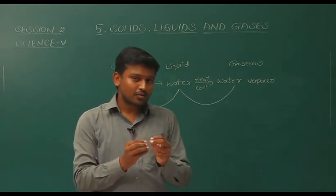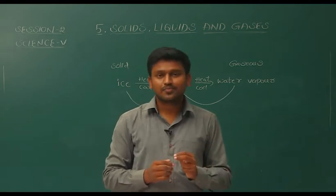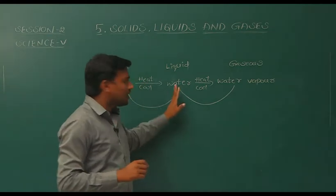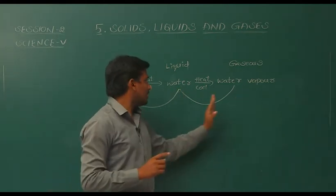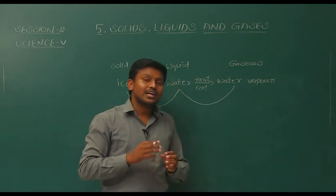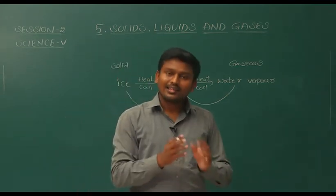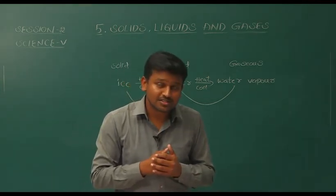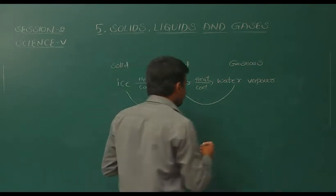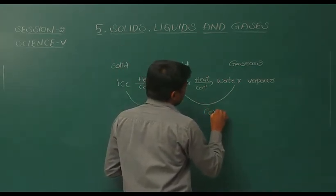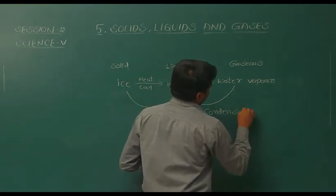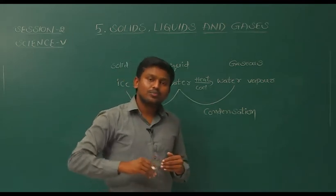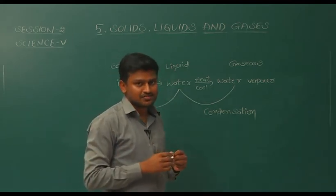These water droplets — how do they form? They are formed due to water vapour converting into water. When water vapour comes into contact with a cool surface, it converts into water. We call this process condensation. Water vapour changing into water is called condensation.